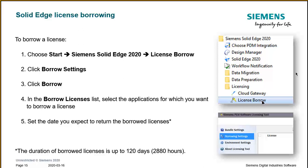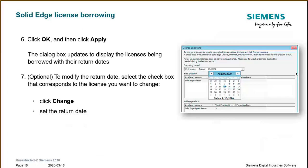To borrow a license, go to Start, then Siemens 2020 or 2019 (whichever version you're running), then License Borrow. Click Borrow Settings and click Borrow. In the Borrow License list, select the applications for which you want to borrow the license. Optionally, you can set the date when you expect to return the borrowed license — the maximum duration is up to 120 days. Click OK and the dialog box updates to show the license being borrowed. You can modify the return date, but in the current situation we suggest using the maximum number of days since we don't know how long you'll need it.